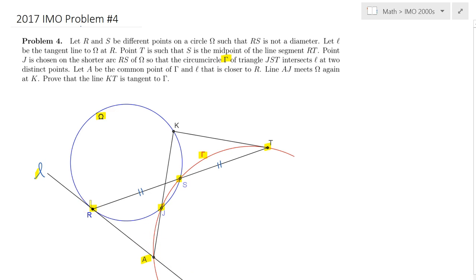We would like to label the intersection of ray AJ with circle Omega as K. Finally, the problem is to show that KT, this line that I have already drawn, is tangent to the red circle at T.